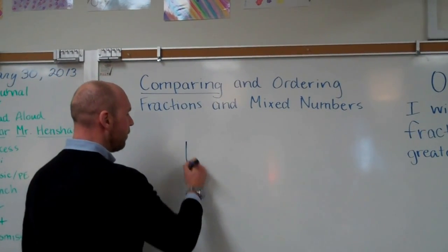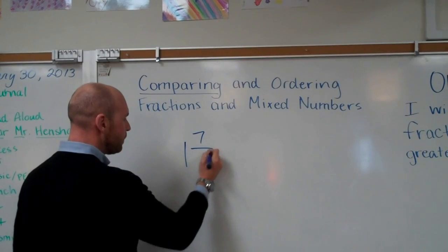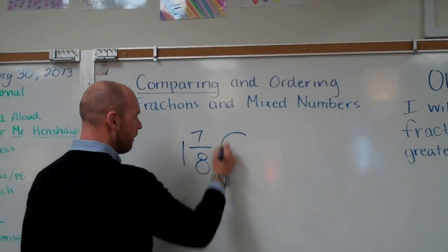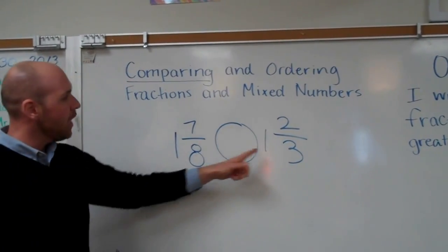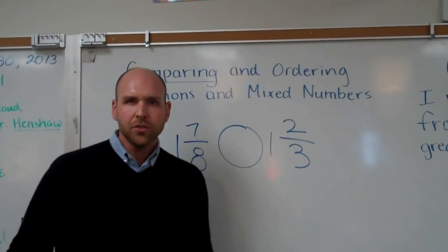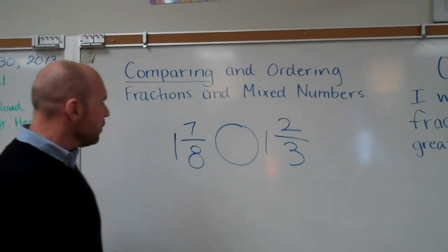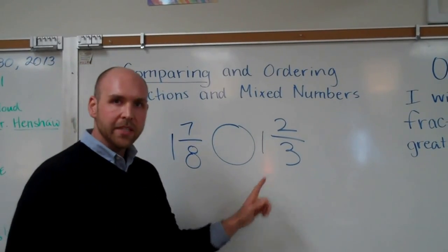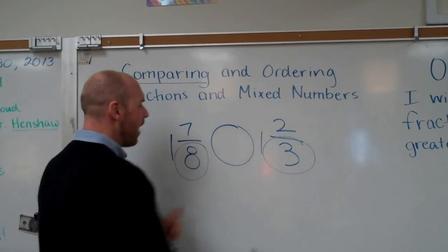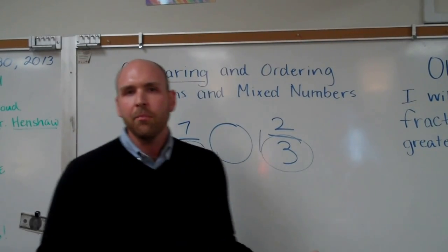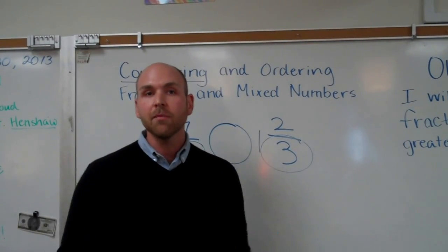So let's take these two. One and seven eighths and one and two thirds. Which is greater, which is less than. So what we need to do is to make sure our denominators agree. Right now we've got apples and oranges. We can't compare these two. So we've got to come up with something different.